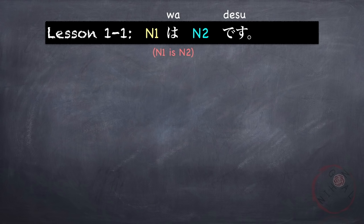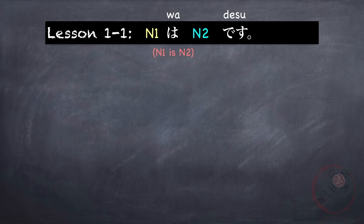Desu also shows respect to the listener. In Japanese, there's a formal way of talking and an informal way. Desu is the default — in the middle — showing politeness. If you're talking casually, desu becomes da. The most polite way of saying desu is de gozaimasu. For this pattern, let's stick to desu. Remember this pattern because this is the basic structure for constructing Japanese sentences. N2 can be a verb, adjective, or a noun. Let's take a look at some examples.